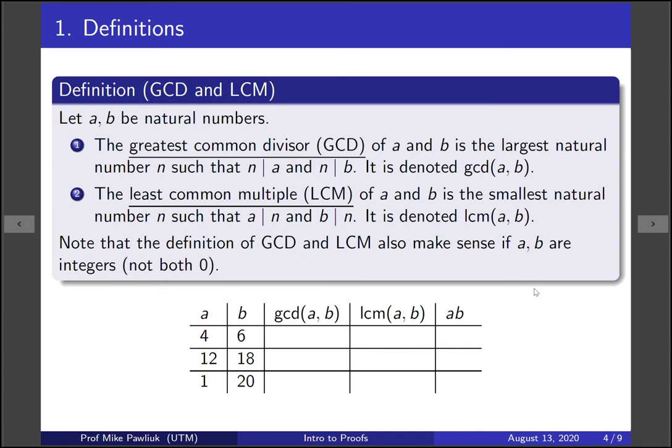Let's start out with two definitions that might be familiar to people. For natural numbers A and B, the greatest common divisor or GCD of A and B is the largest natural number N such that N divides A and N divides B. We denote it as GCD(A,B).